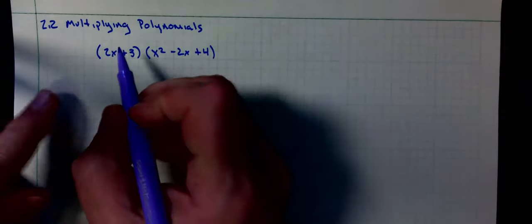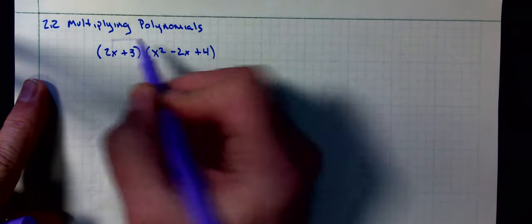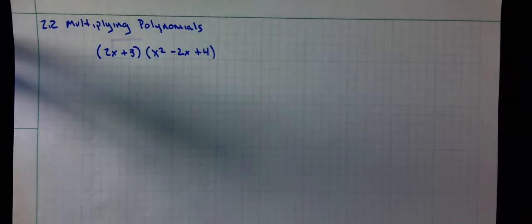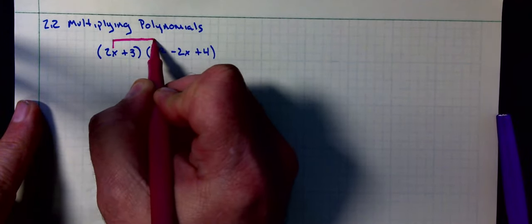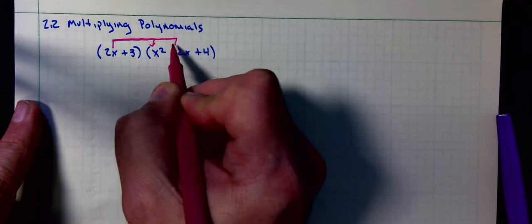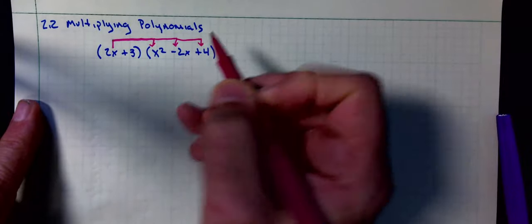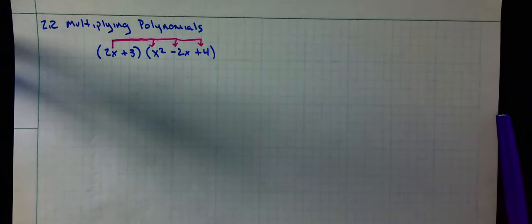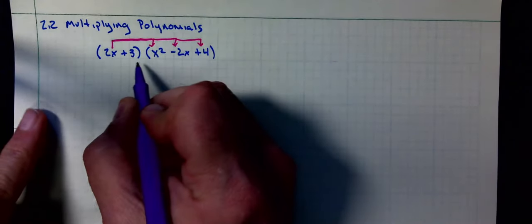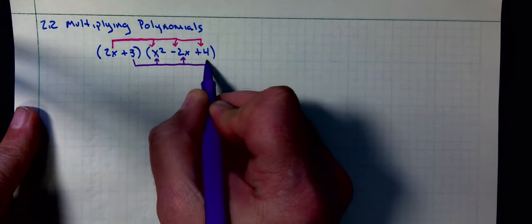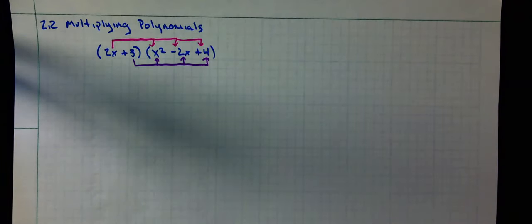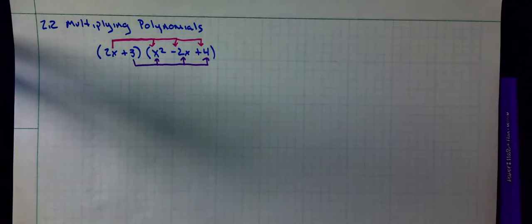So what I'm going to do is I want to multiply 2x times everything. Then we're going to multiply the 3. Let's do the first part.